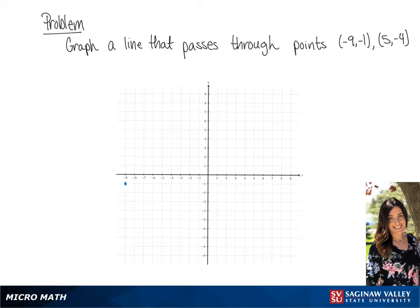Now we're going to graph 5, negative 4, so we're going to go to the right 5 and down 4. And now we're going to draw a line that passes through both of these points.